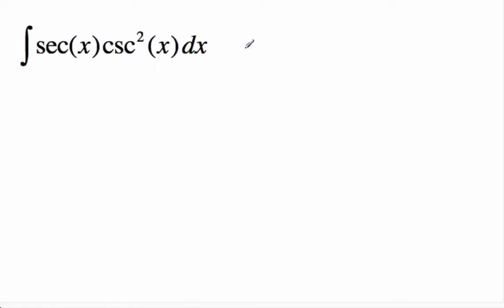Hello, this is Mr. Collier. Today we're doing an integral of secant x cosecant squared x. The first step in this integral is to use the trig identity cosecant squared x equals 1 plus cotangent squared x.